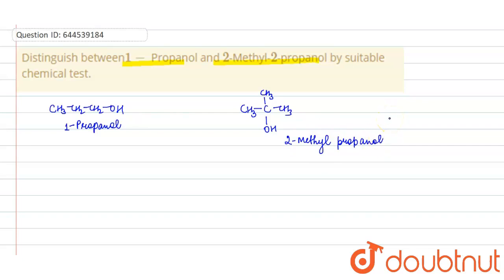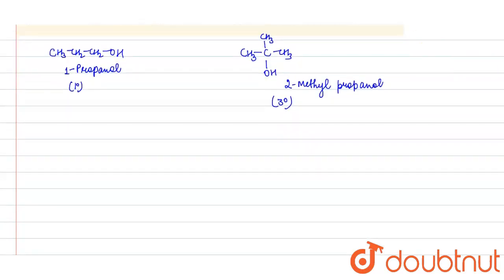Now see, 1-propanol is your primary alcohol and 2-methyl-2-propanol is your tertiary alcohol. So primary and tertiary alcohols are distinguished by using Lucas reagent.